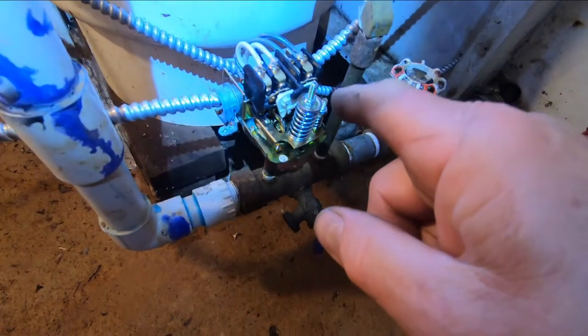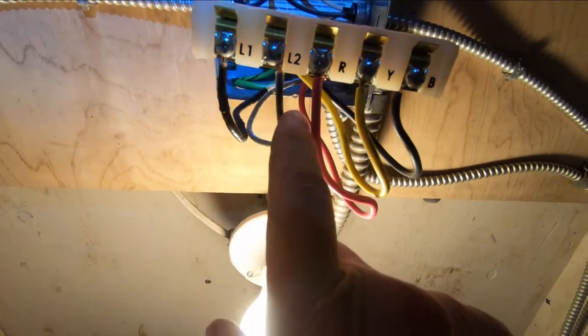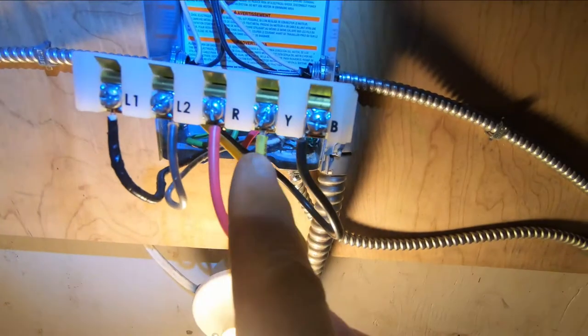When there's a demand created at the pressure switch, these contacts close, passing that current back up here to line one and line two in the control panel. Here's your leads from your pump - you have your three motor leads: red, yellow, and black.